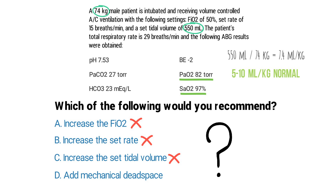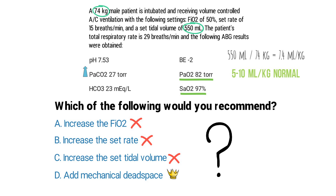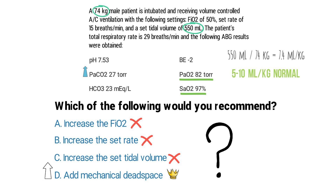That means only one answer choice remains: add mechanical dead space, which is the best option for this patient. Adding mechanical dead space to the circuit is a method for treating hyperventilation — the patient will essentially rebreathe gas from their anatomic dead space, which will increase the PaCO2 level. For the TMC exam, remember that if a patient is hyperventilating with a decreased PaCO2, you should decrease minute ventilation by lowering the rate or tidal volume, or increase dead space. The correct answer is D: add mechanical dead space.